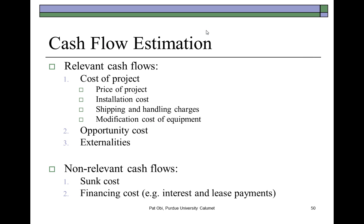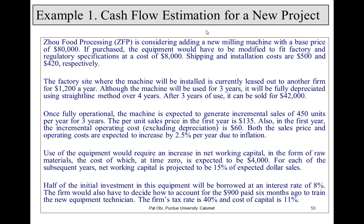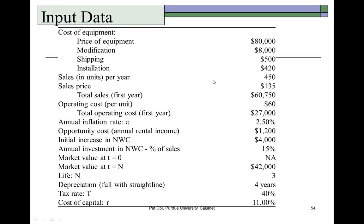Let's proceed to the mini case that helps us learn how to perform the calculations. Here's the input data: we're considering the purchase of equipment with a base price of $80,000. It will cost $8,000 to modify the machine for factory use, shipping cost is $500, and installation cost is $420. These are all part of the cost to purchase and install the equipment for use.